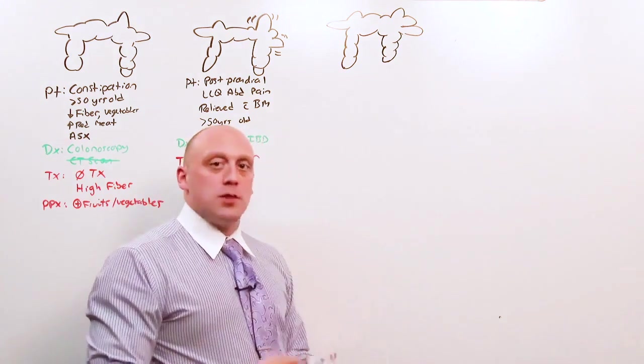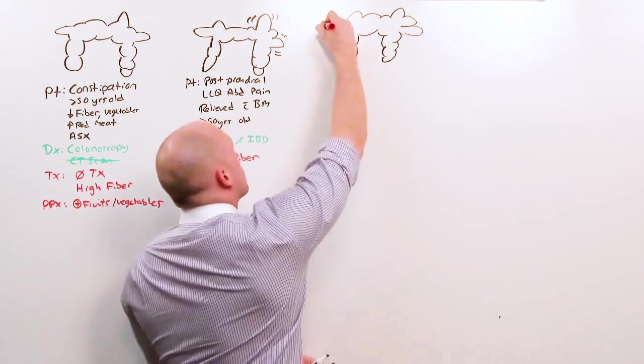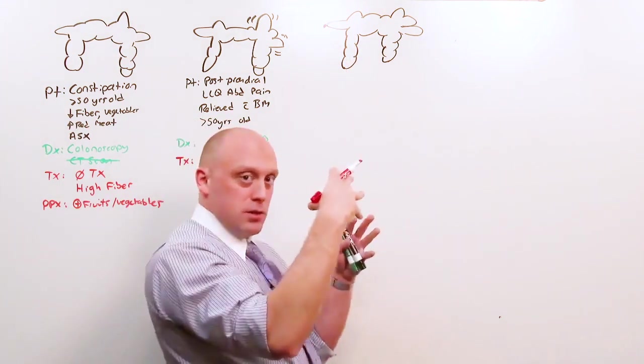If one of these diverticula happens to have an arteriole at the top and it gets stretched, it can bleed.